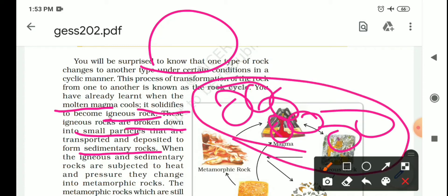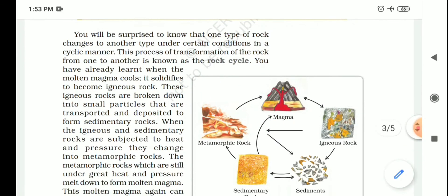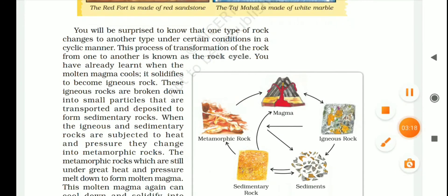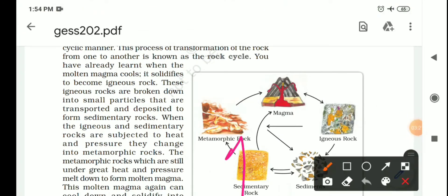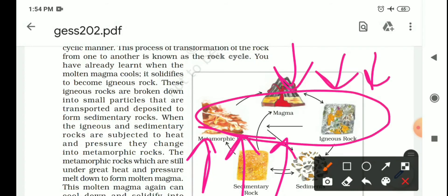And when igneous and sedimentary rocks are subjected to heat and pressure, what will become? Metamorphic rocks. When we first started, there was formation of metamorphic rocks. These are metamorphic rocks which are still under great heat and pressure melt down into form of molten magma.